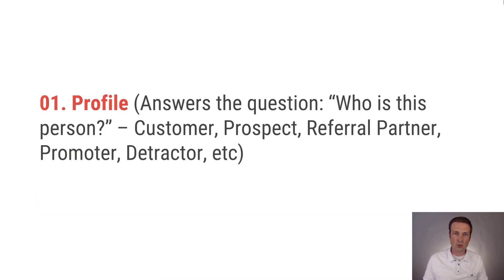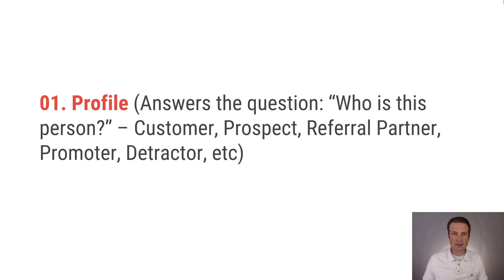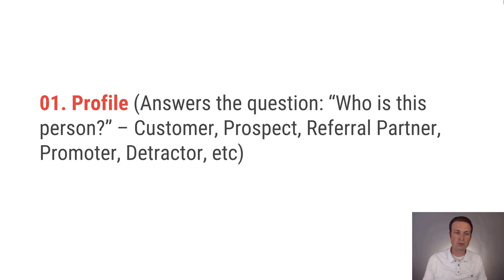The first category is profile. This answers the question of who is this person — are they a customer, a prospect, a referral partner? This gives you a really solid, high-level foundation to see what your database looks like. At any given time you'd be able to pull up a report that says I've got X amount of customers, X amount of prospects, X amount of referral partners — really foundational information for your database.